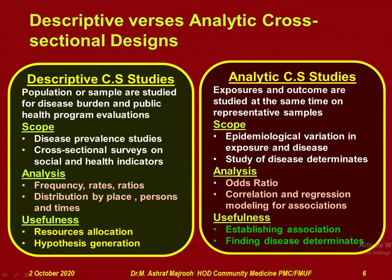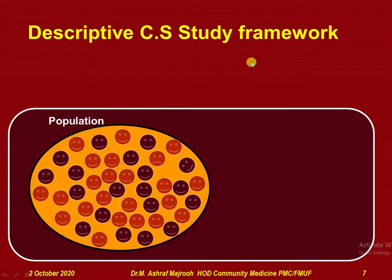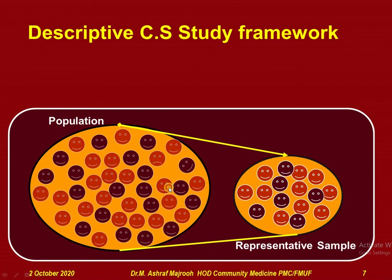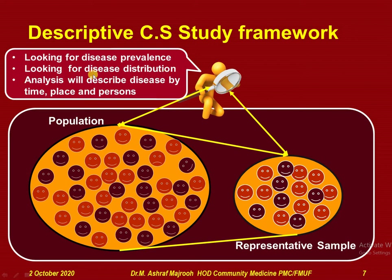The study framework of descriptive cross-sectional study begins with a reference population from which a representative sample is drawn. The observer looks into disease prevalence and disease distribution by time, place, and person. Through observation and adjusting for errors, findings are generalized back over the reference population.